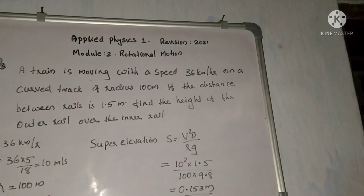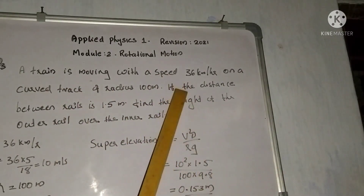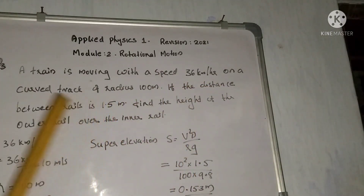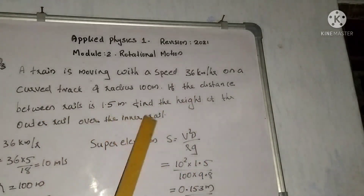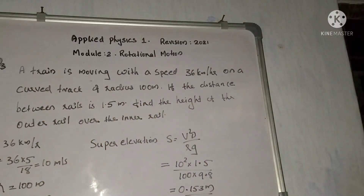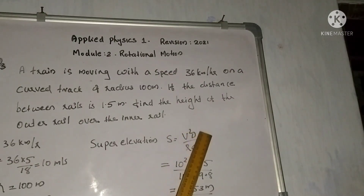Next problem: a train is moving with a speed of 36 km per hour on a curved track of radius 100 m. If the distance between the rails is 1.5 m, find the height of the outer rail over the inner rail. This height is called super elevation, and the formula is v² / (R × g).